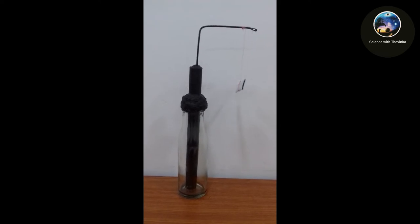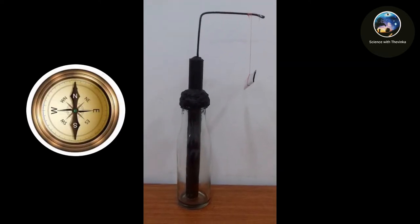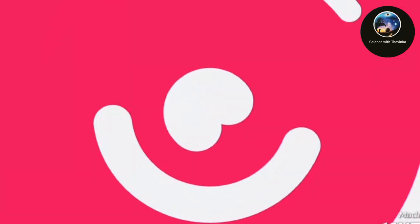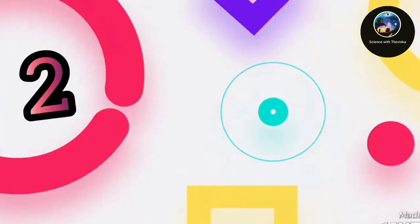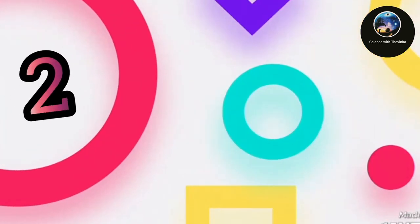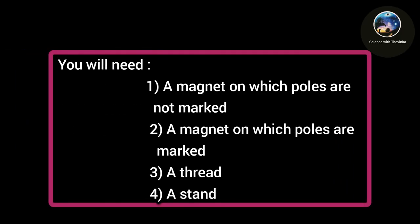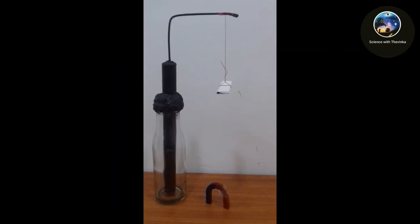The hanging magnet stopped by facing the direction of north and south. Now I'm going to observe the attraction or repulsion when a magnet with known poles is brought closer.